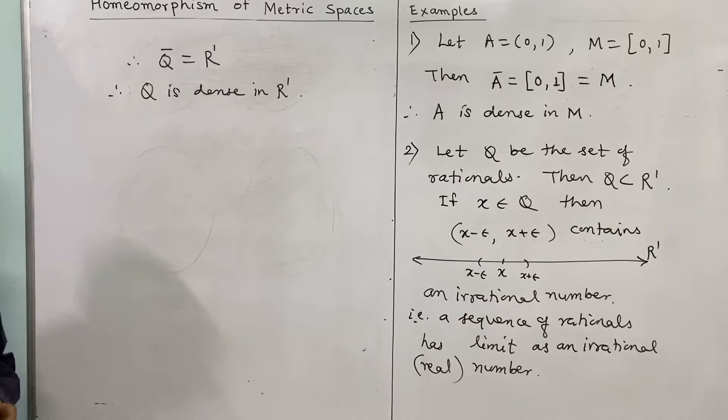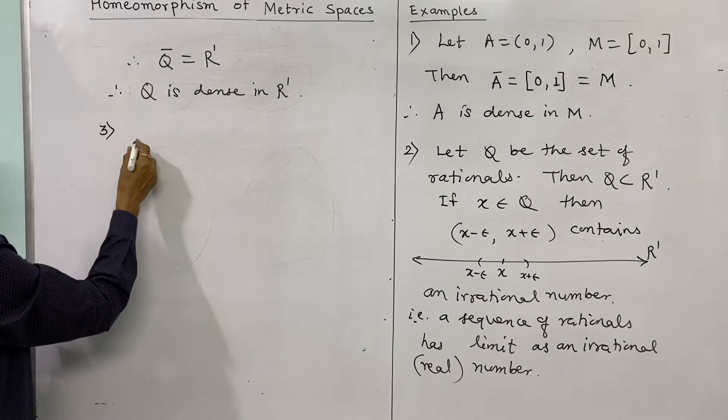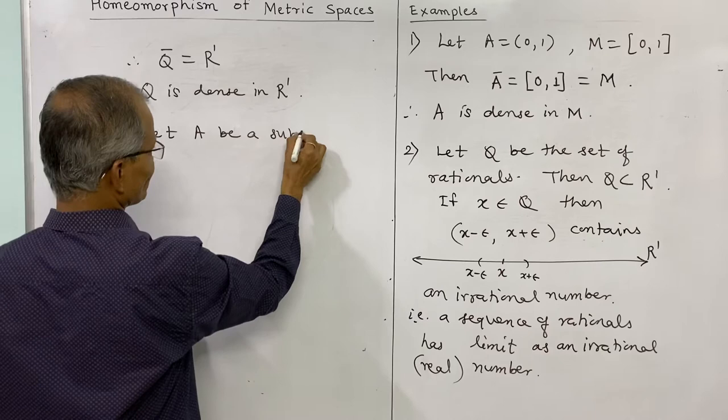For the third example, let A be a subset of a discrete metric space RD.